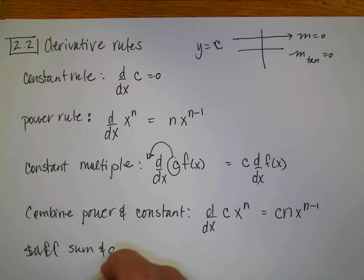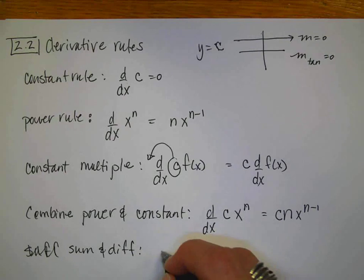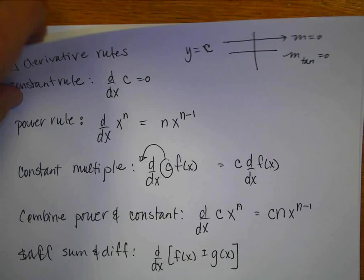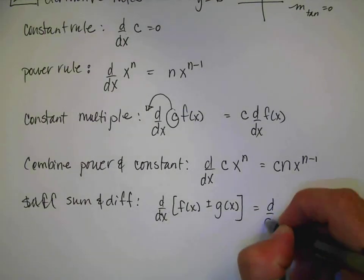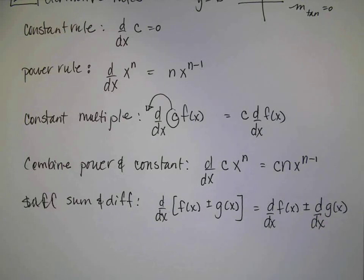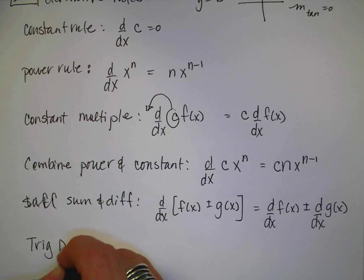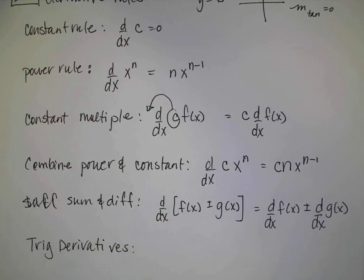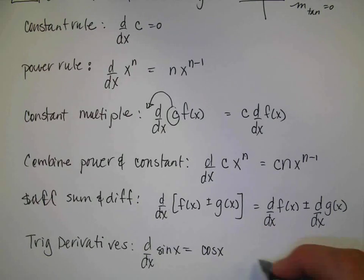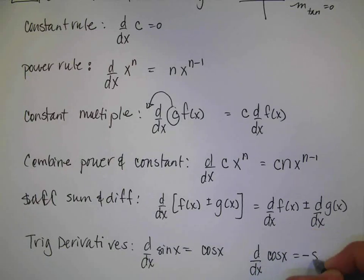Sum and difference rules: if I take the derivative of one function added or subtracted to another function, I can split them up and take the derivative of the first function, then add or subtract the derivative of the second function. We have lots of tricks to help solve derivatives. There are also special trig derivatives: the derivative of sin(x) is cos(x), and the derivative of cos(x) is negative sin(x).